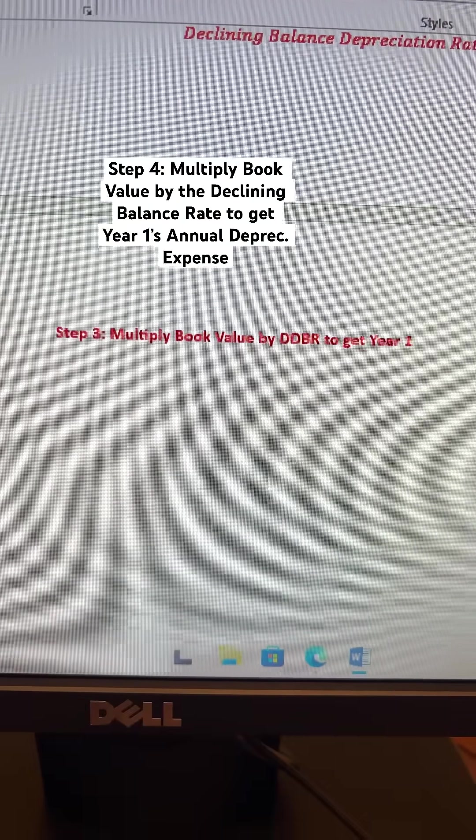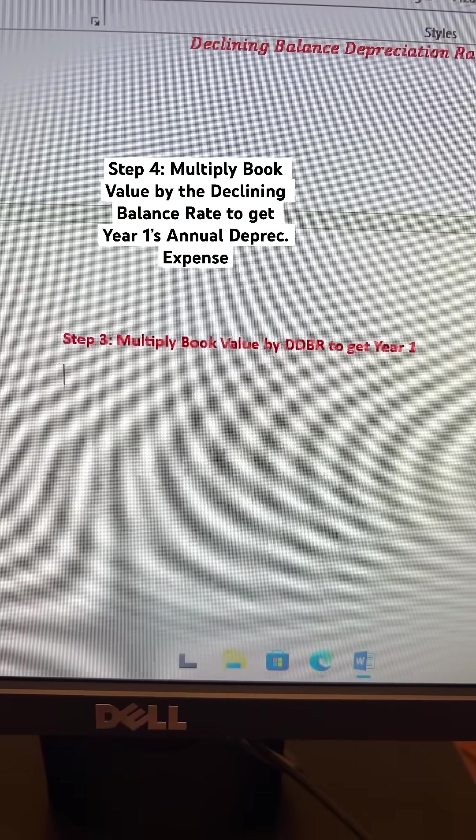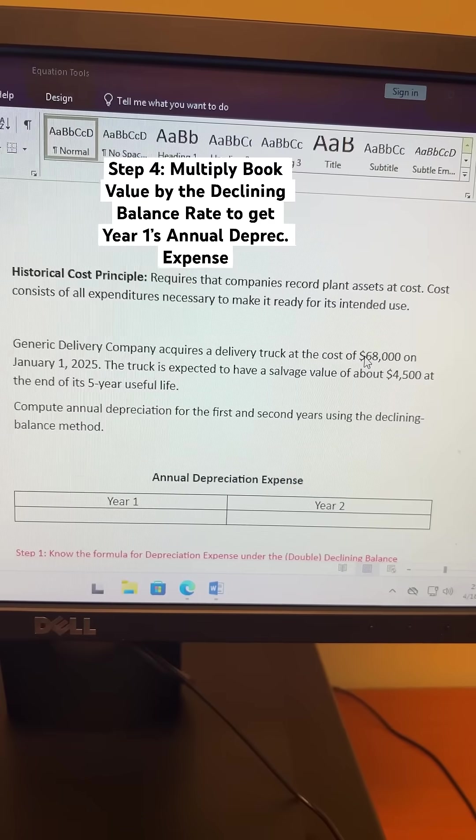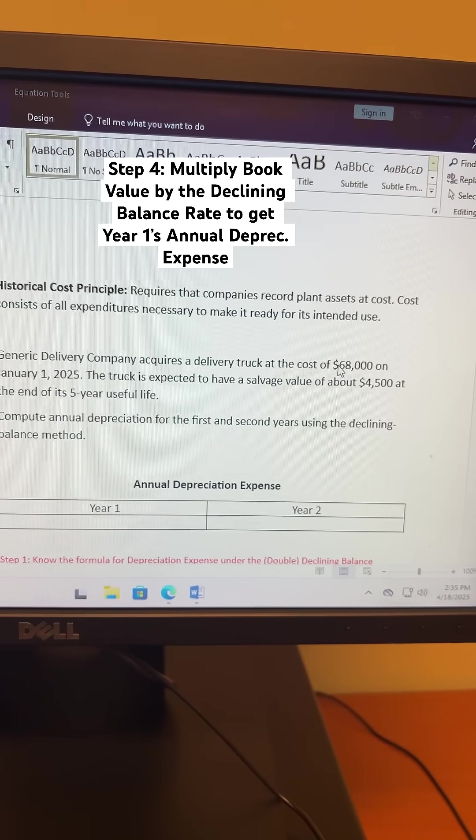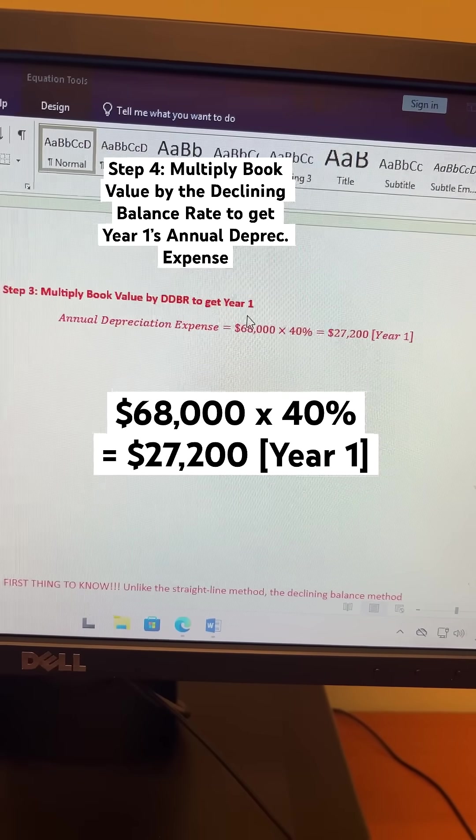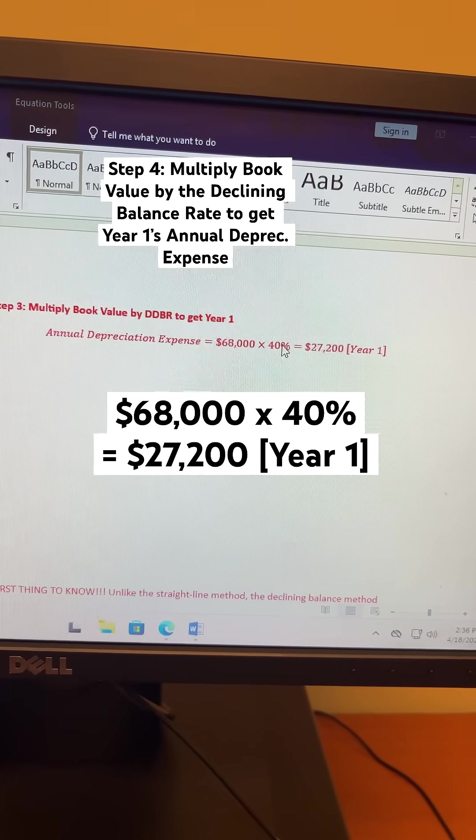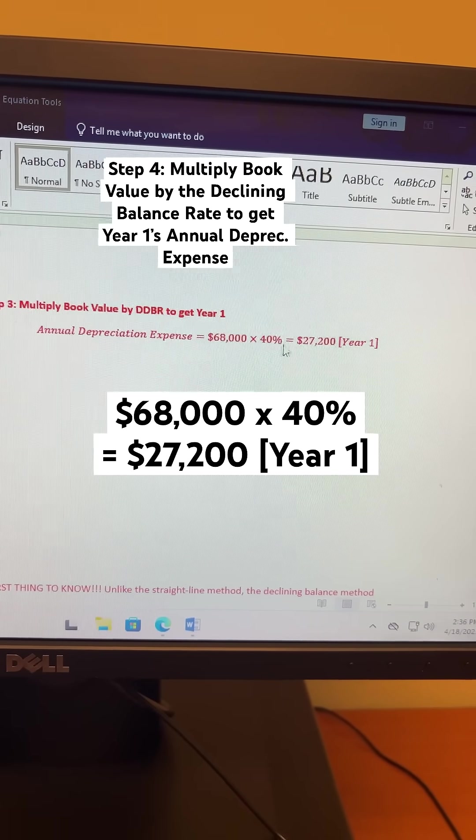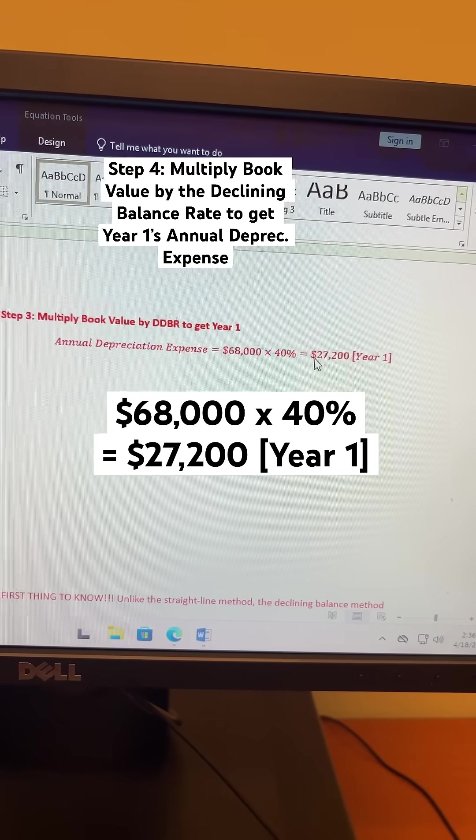Step 4 is to multiply the book value by the double declining-balance rate to get year 1. Your book value is $68,000. So multiply your book value of $68,000 times your 40% double declining-balance rate, and you're going to get $27,200 for year 1.